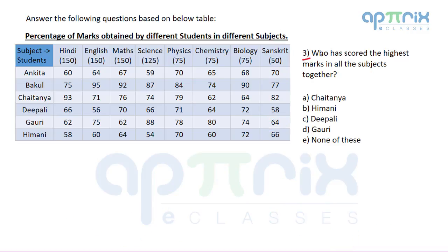Question 3 asks: who has scored the highest marks in all subjects together? You might think this requires heavy calculation, but the answer can be marked directly as 'none of these.' Here's why — from Question 1, we already observed that Bakul scored the highest mark in 4 subjects.